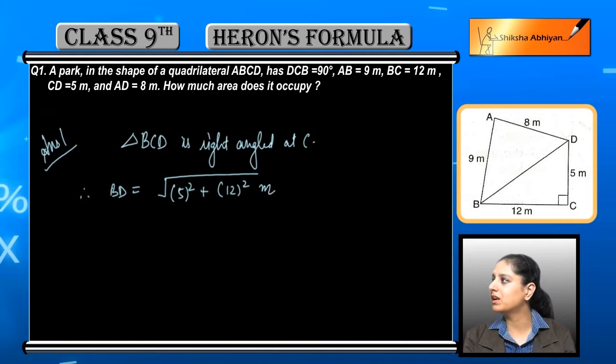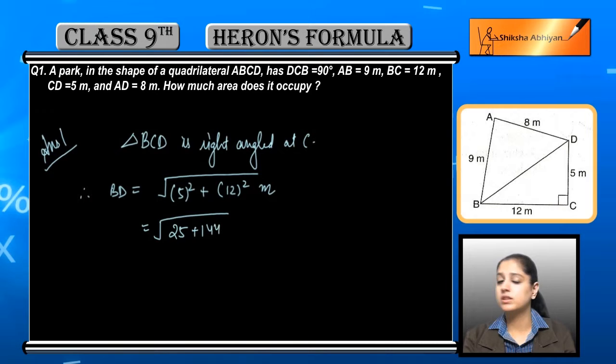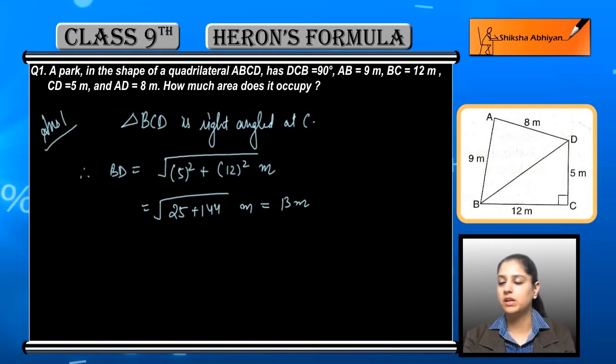So if we find the hypotenuse, BD equals square root of (5 squared plus 12 squared). The side BD equals this, and ultimately when we solve, we get 13 meters as BD.